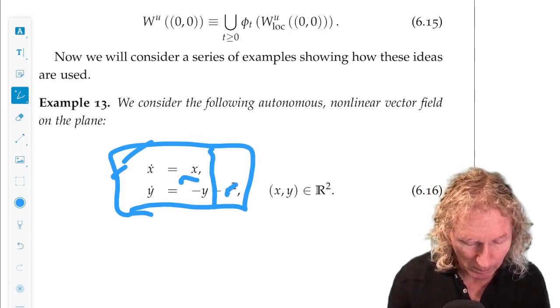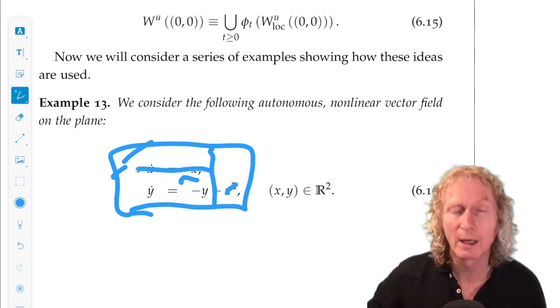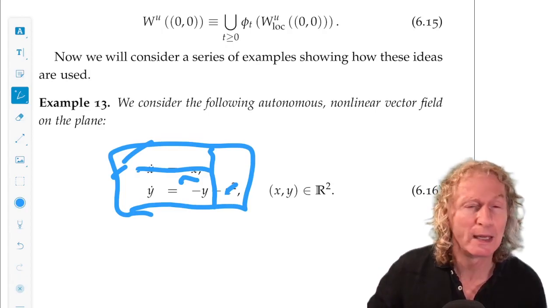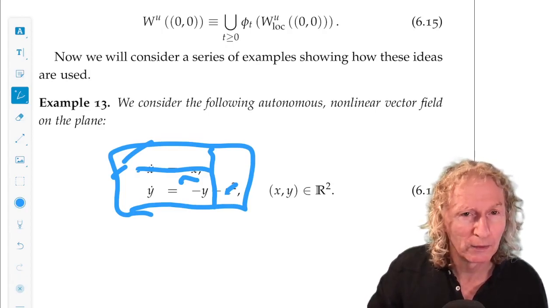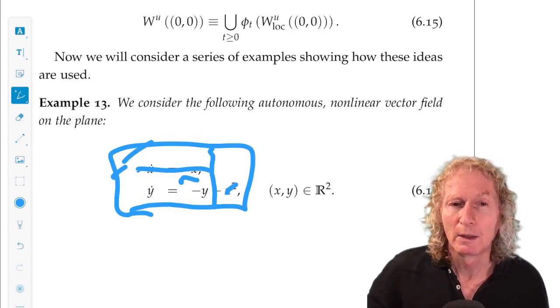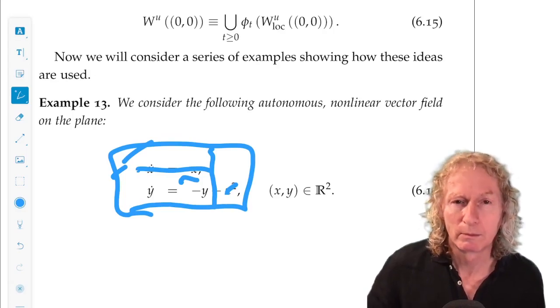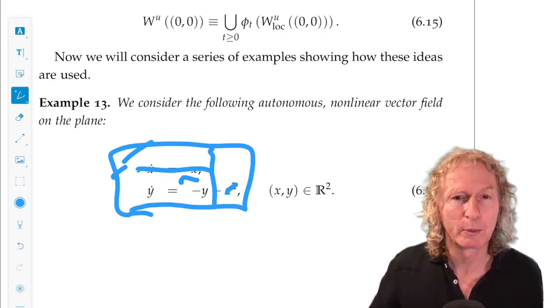Setting x equal to 0, we have y dot equals minus y. So, any point on the y-axis, starting on the y-axis, decays to 0, approaches 0 at an exponential rate.